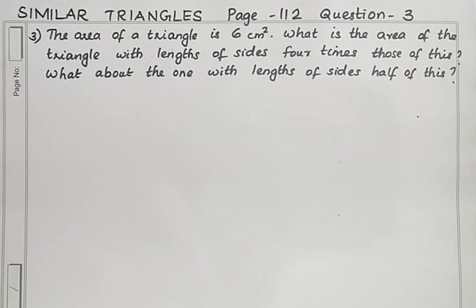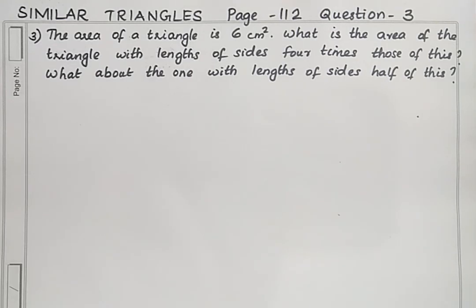Hi students. Here we are going to study Standard 9 Similar Triangles, page number 112, question number 3. The area of a triangle is 6 cm². What is the area of the triangle with lengths of sides 4 times those of this? The second part: what about the one with lengths of sides half of this?